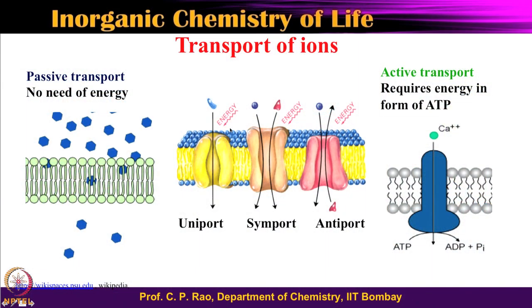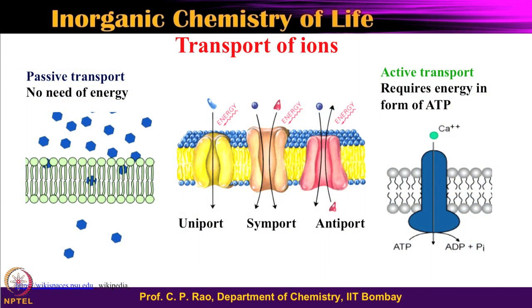This brings us to the arena of ions going through membranes and giving messenger properties. One needs to look at the transport of ions. We have seen the concentrations of sodium, potassium, magnesium, and calcium inside and outside the cell, and biological systems need a mechanism to maintain those concentrations. This brings in the phenomenon of transportation of ions — particularly the transport of alkali and alkaline earth ions.